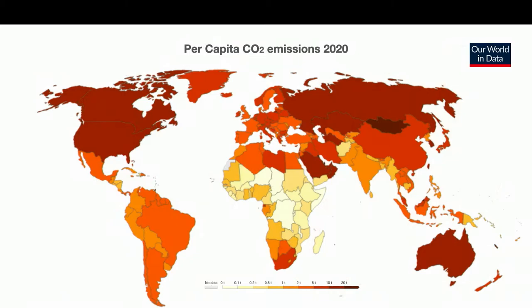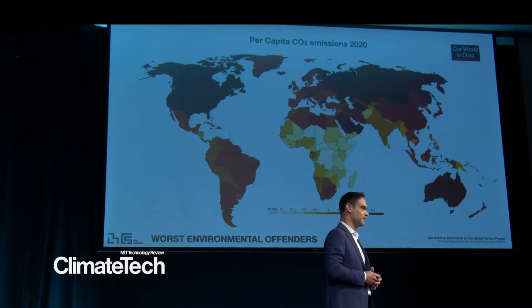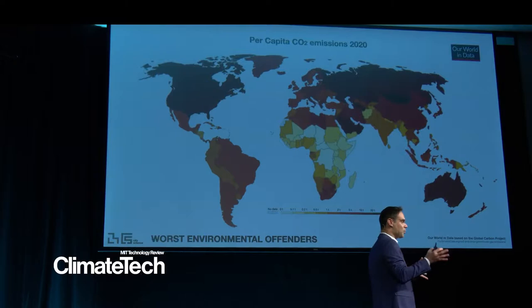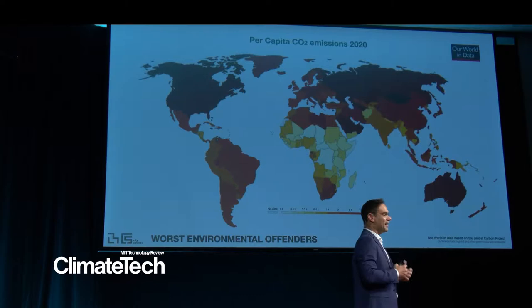Another important thing is how do we calculate the CO2 per person on the planet. What we usually do is look into the country, see the production of CO2 of that country, and then divide it per person. With that lens, countries like the United States and China are the most important environmental offenders.